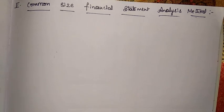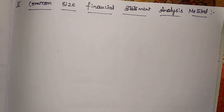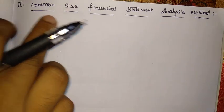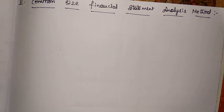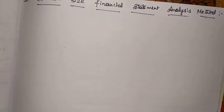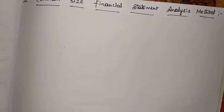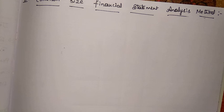Let us see the second method of financial statement analysis, that is common size financial statement analysis method. Under this method, all the items of a financial statement are converted into a percentage of the biggest item in such statement. For example, in a common size profit and loss account, all items are expressed as a percentage of sales, and in a common size balance sheet, all items are expressed as a percentage of total assets or total liabilities.